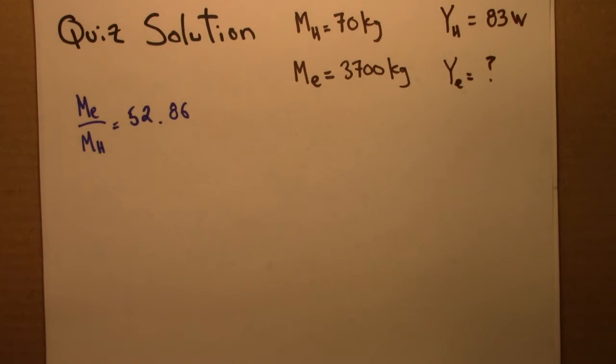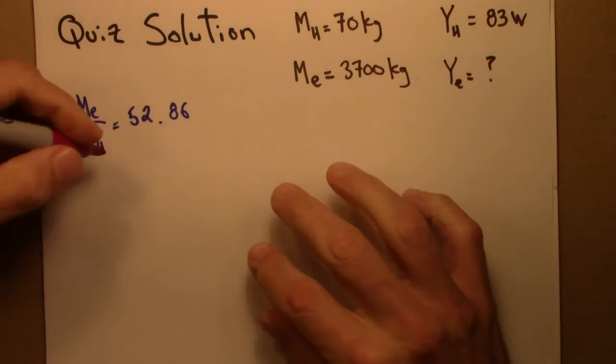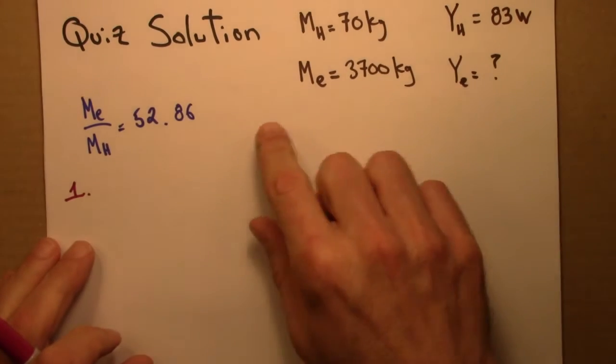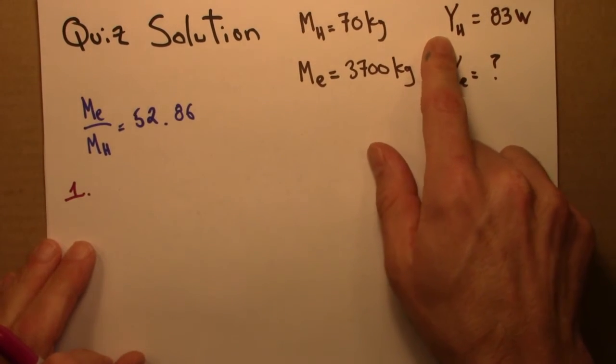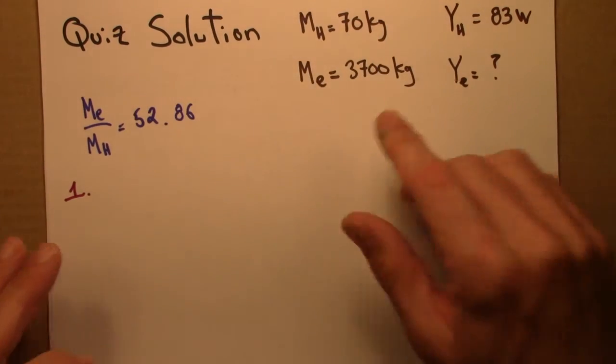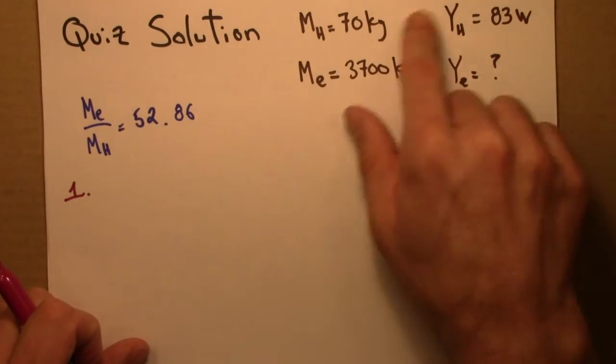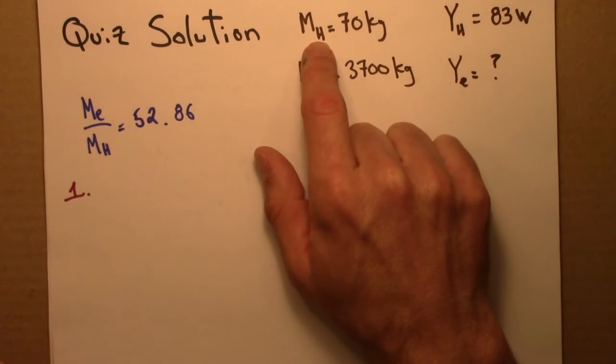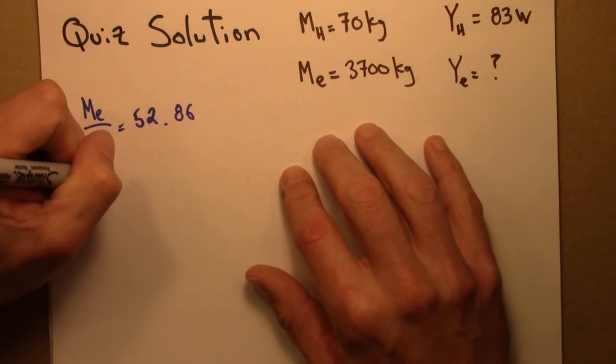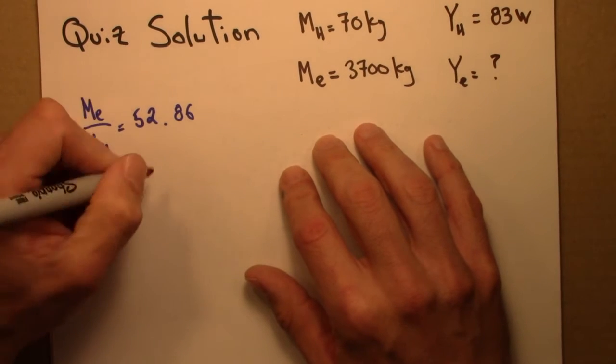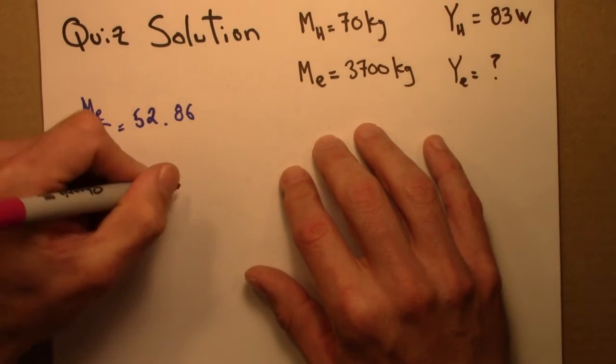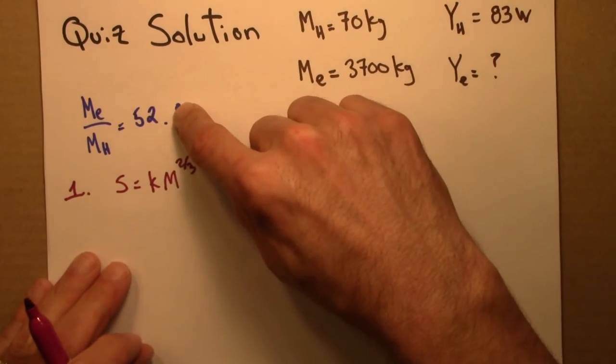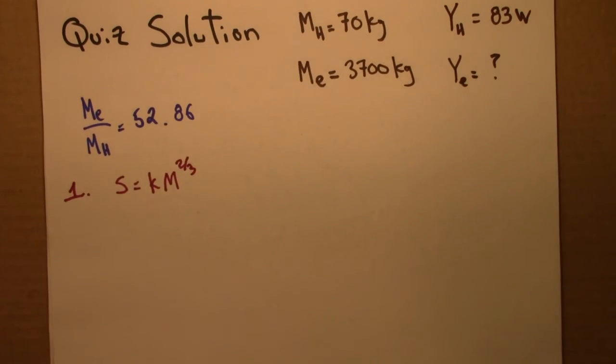Alright, so there are two parts to this quiz. First is, what if we assume that Y depends on the surface area? That's not the case, but that's a reasonable thing to assume. So let's see what happened then. So the surface area has a two-thirds exponent. So then I'm going to want to take this number and raise it to the two-thirds power.